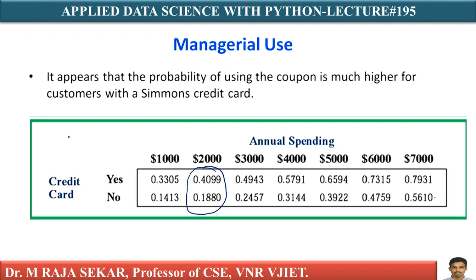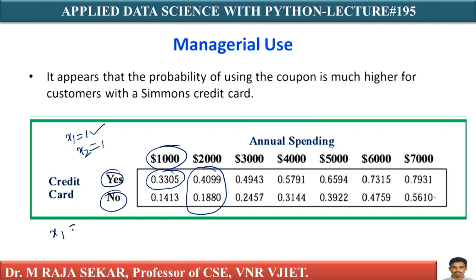For example, if X1 equal to 1 (meaning $1,000 spending) and X2 equal to 1 (using credit card), we get 0.3305. When X1 equal to 1 and X2 equal to 0 (no credit card, spending $1,000), we get 0.1413. We can extend this discussion for spending up to $7,000.